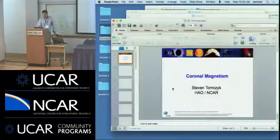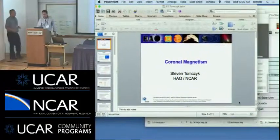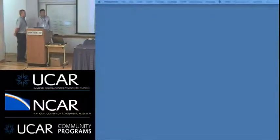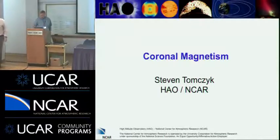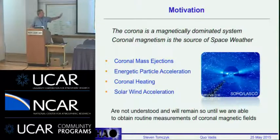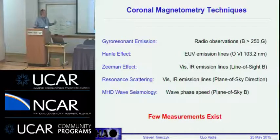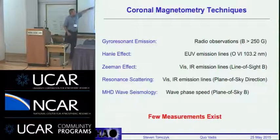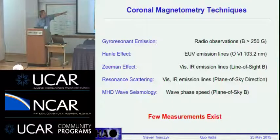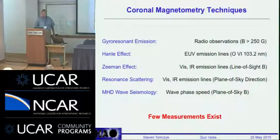Stephen Tomczyk of HAO talking about coronal magnetism. We know it's important because we want to understand the very important processes that constitute the sources of space weather. Stephen just gave a great talk about radio, which is the top technique for coronal magnetometry. UV and EUV are done from space. I'm going to concentrate on the last three techniques: the Zeeman effect, resonant scattering, and wave seismology to learn about coronal magnetism.